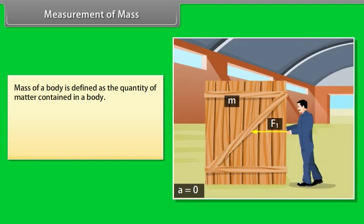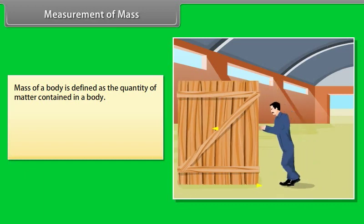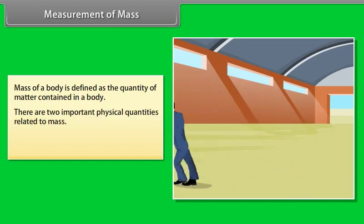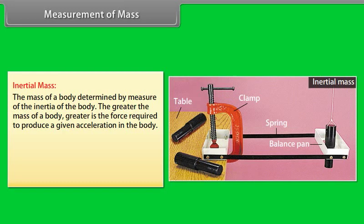Measurement of mass. Mass of a body is defined as the quantity of matter contained in a body. There are two important physical quantities related to mass of a body. These quantities are inertial mass and gravitational mass.